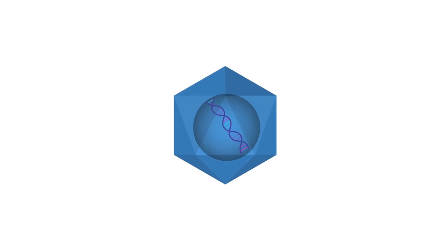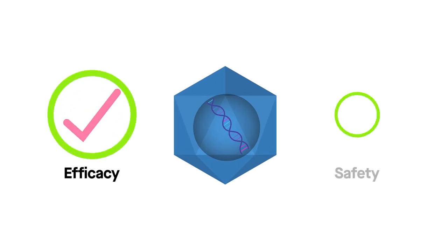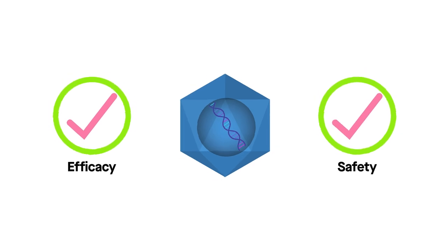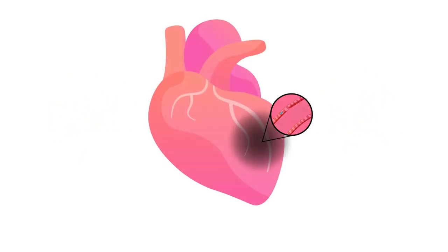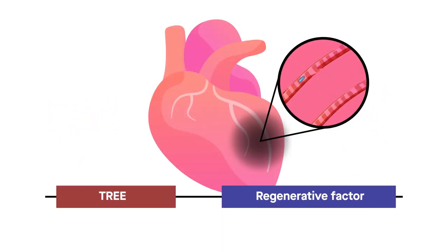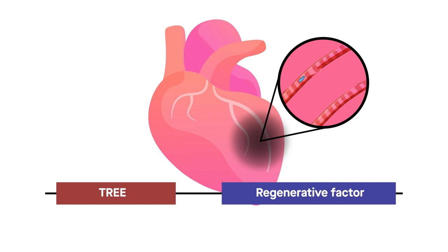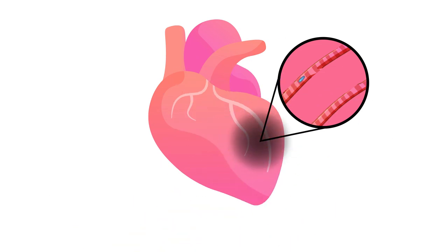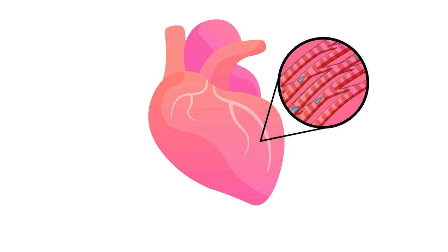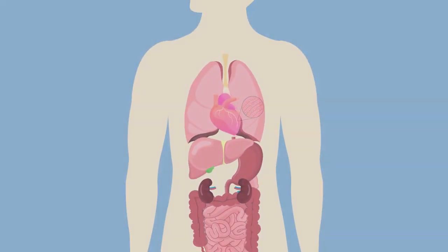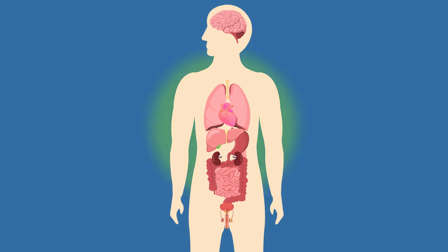The components of the gene therapy vectors still need to be optimized for both efficacy and safety. Nevertheless, this proof-of-principle study suggests that gene therapy using targeting tools like zebrafish TREEs is a promising way to boost cardiac regeneration after heart injury in a spatiotemporally controlled manner, potentially even in human patients. And it's not just a matter of the heart — this approach could help regenerate other tissues, too.